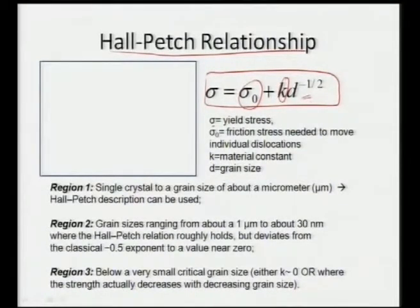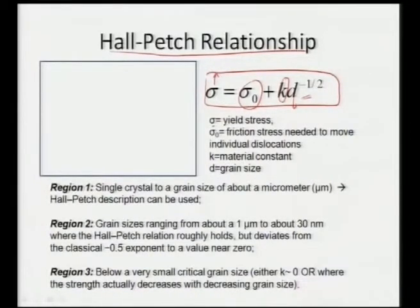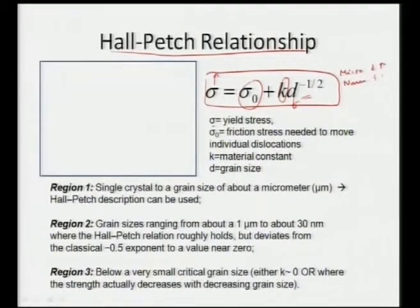We can see the yield stress will start increasing as we have lower and lower grain size. That is the basic relationship between the yield stress and the grain size of the material. When we have micro grains, d is pretty high, and when we have nano grains where d is pretty low, our ultimate yield stress will be very, very high.